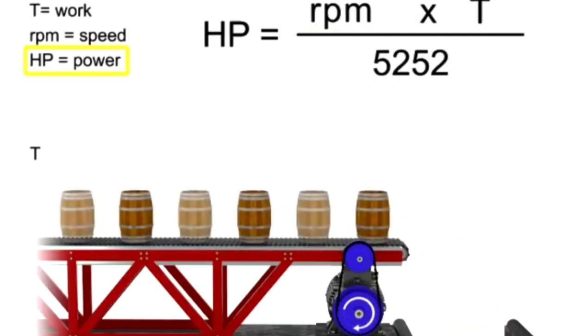If horsepower remains constant, then speed and torque are inversely proportional. As the torque increases, speed decreases to maintain constant horsepower.